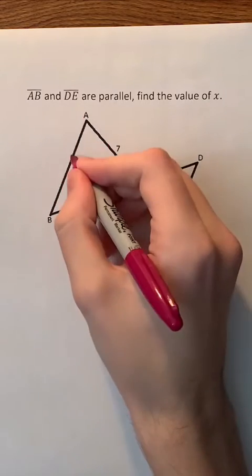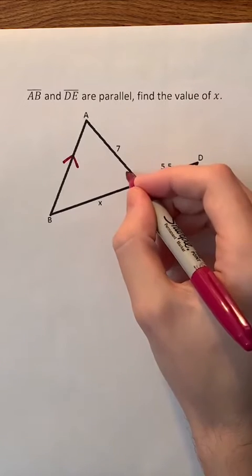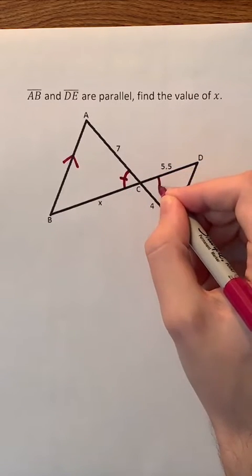Line segments AB and DE are parallel. Find the value of X. We know that these two angles are vertical angles so they must be congruent.